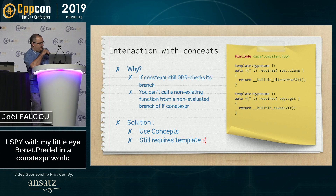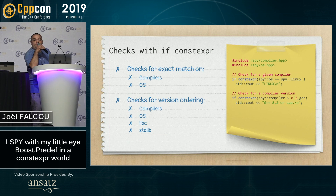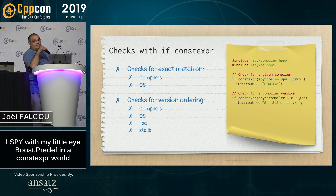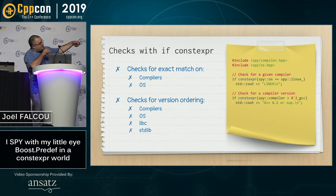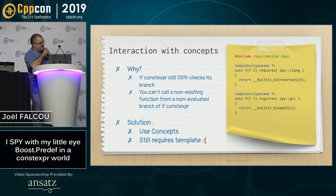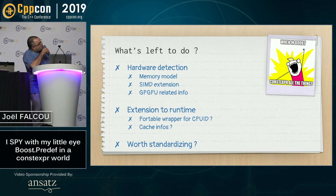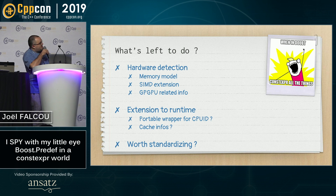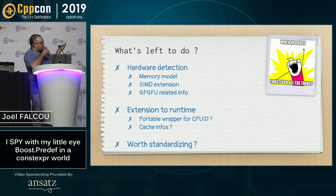So I have a question, and more of a comment than a question: should we think about changing the semantic of if constexpr? Should if constexpr stop checking the branch you won't compile? If somebody has a reason for that, come find me — I'll buy you a coffee and we can discuss it, because it would actually get rid of all of this. I'm also trying to add more stuff, like detecting information about the memory model. The question is whether this should be expanded to runtime by having a natural portable wrapper for CPU ID and similar functions — and maybe all my woes could be solved by having this standardized so the compiler can do its job. You can play with the library. It's rather rough, but it works. Tell me if it actually solves your issues. Thank you for your attention.